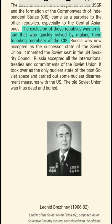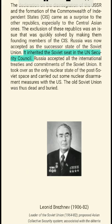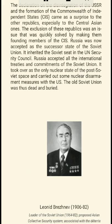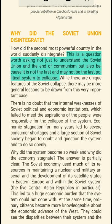The Declaration on the Disintegration of the USSR and the Formation of the Commonwealth of Independent States came as a surprise to the other republics, especially the Central Asian ones. The exclusion of these republics was an issue that was quickly solved by making them founding members of the CIS. Russia was accepted as the successor state of the Soviet Union, inherited the Soviet seat in the UN Security Council, accepted all international treaties and commitments, and took over as the only nuclear state of the post-Soviet space. Leonid Brezhnev (1906–82), leader of the Soviet Union from 1964–82, was associated with the détente phase in relations with the US and involved in suppressing a popular rebellion in Czechoslovakia and in invading Afghanistan.